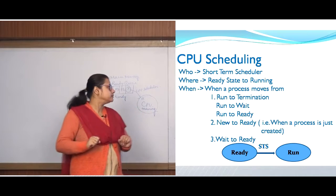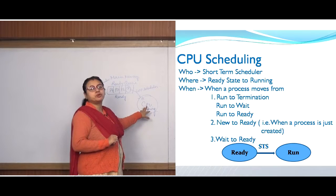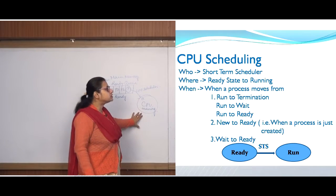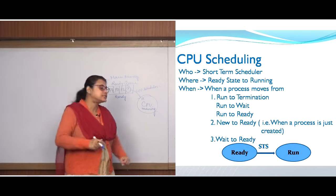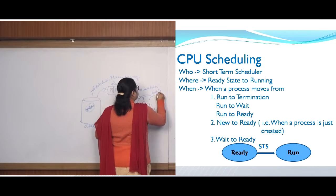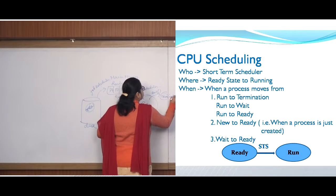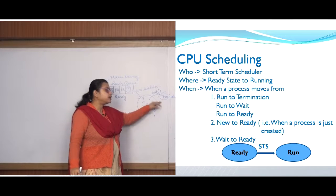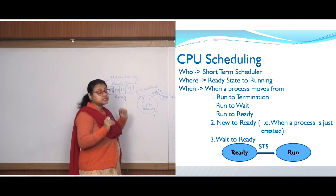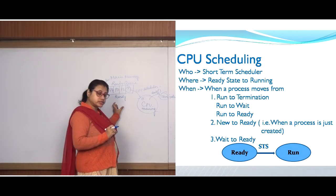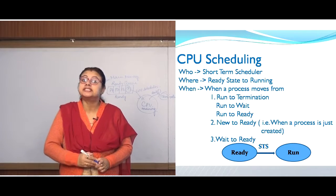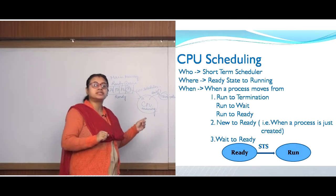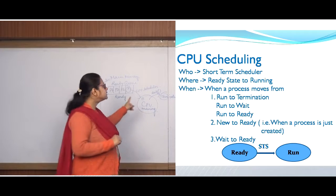For example, run to termination: inside the CPU, say process P1 is running. When the CPU scheduler is next invoked, say this running process has completed its task, executes the exit system call, and becomes terminated. From running to terminated state, the process has completed its task, the CPU becomes idle or free, and then it is the responsibility of the CPU scheduler to take a new process from the ready queue to the CPU so that the CPU will not sit idle — that is the main objective, to utilize the CPU to the maximum.